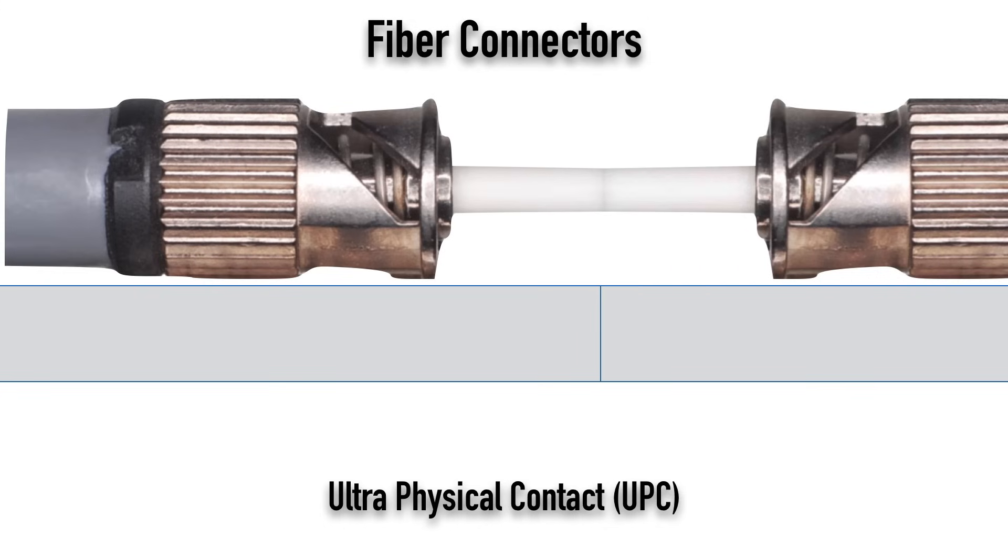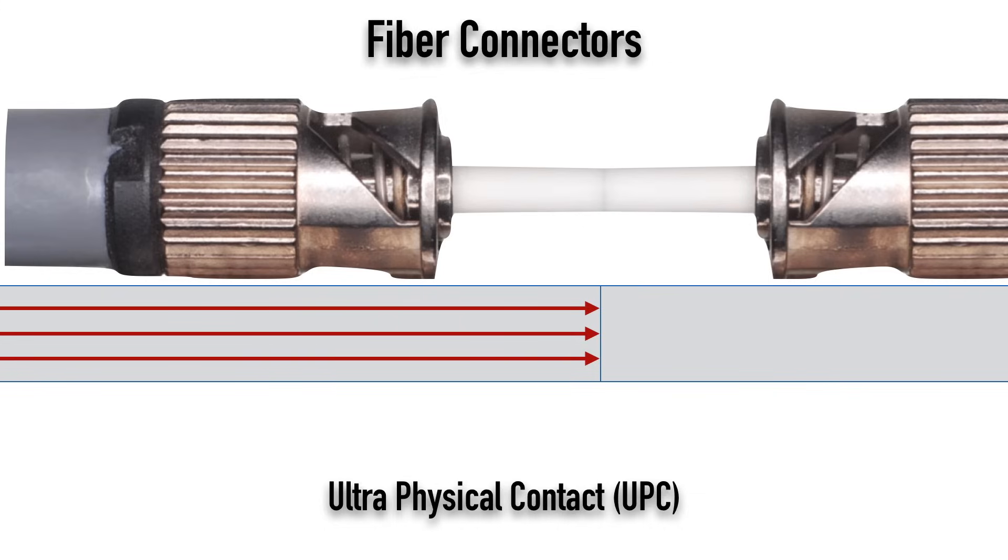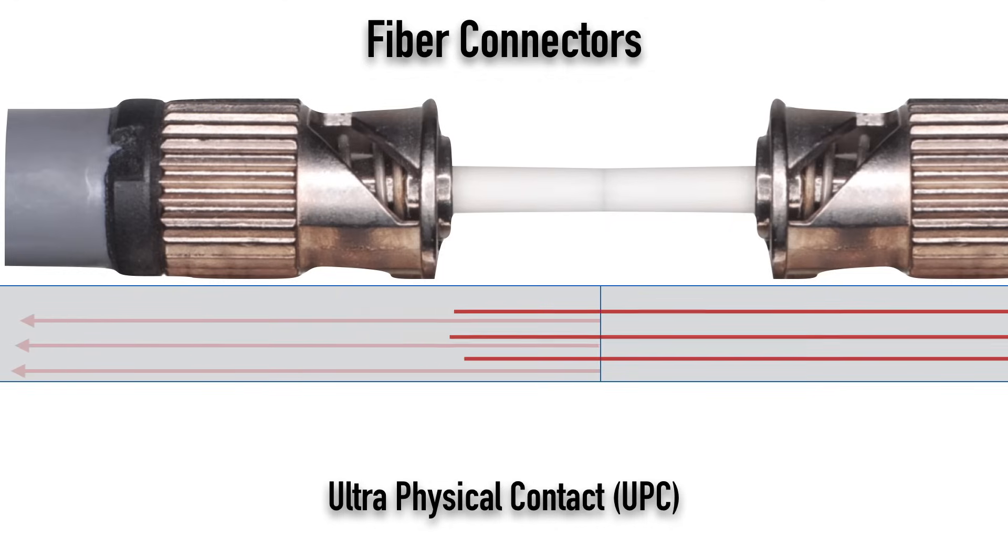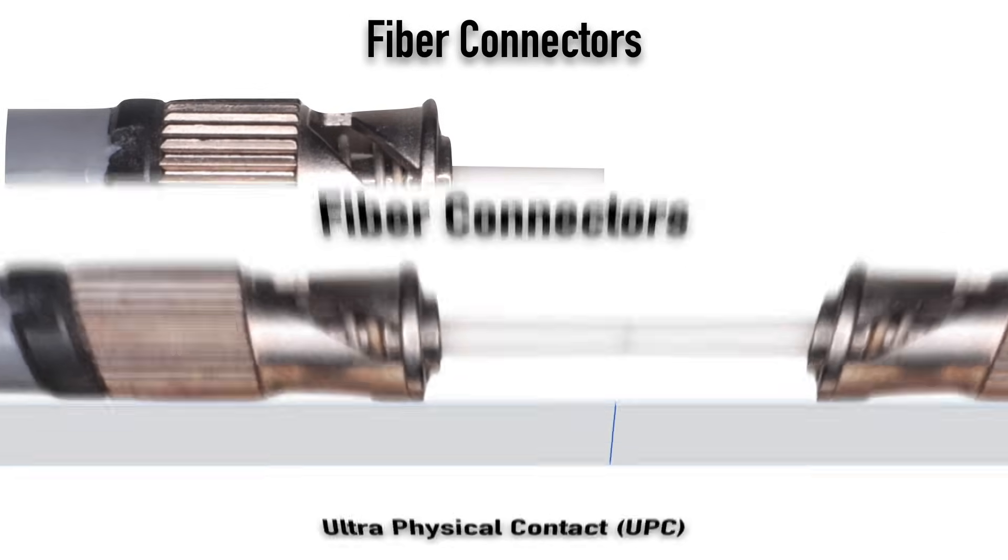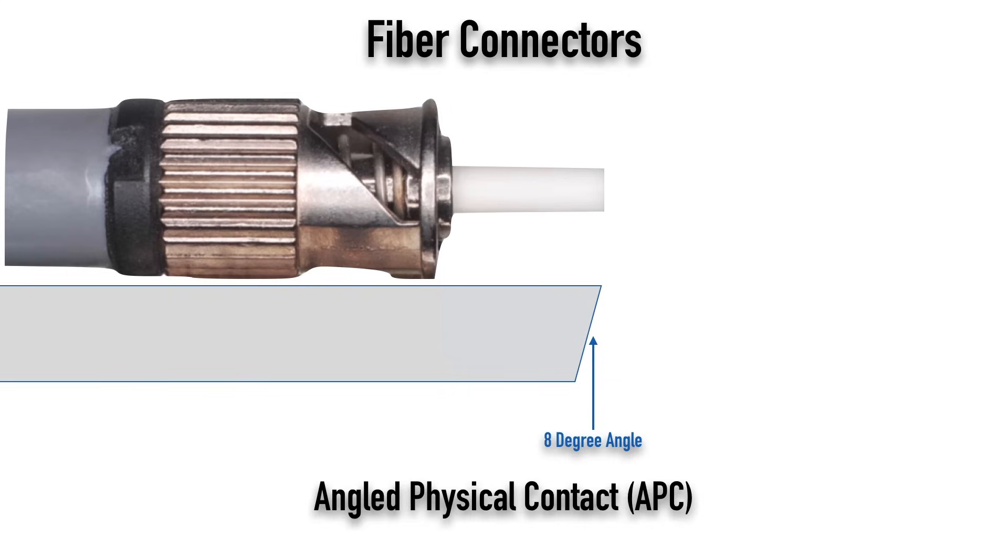When the light comes in, let's say from the left-hand side, and it hits that interface between the ST connectors, hopefully almost all of the light is going to pass through and go into that other connector and onto its destination. But no matter how much we polish, there's going to be a little bit of reflection. And that reflection could come back to us. It could come back to the optical source, the laser, and actually damage that laser in some cases. So many people, instead of using this approach, where we have a flat surface touching a flat surface, which is known as a UPC, an ultra-physical contact,